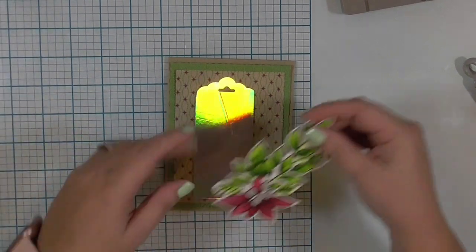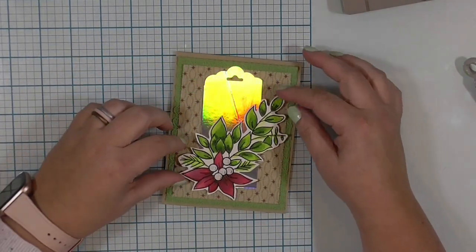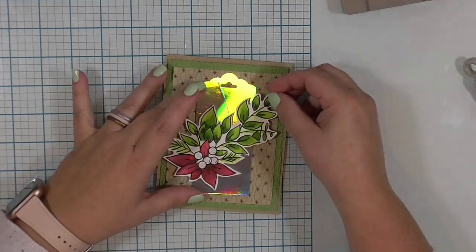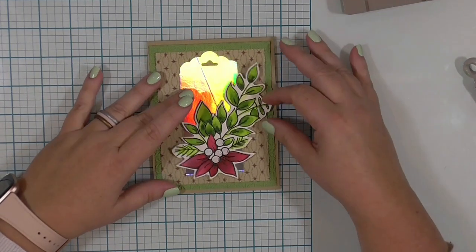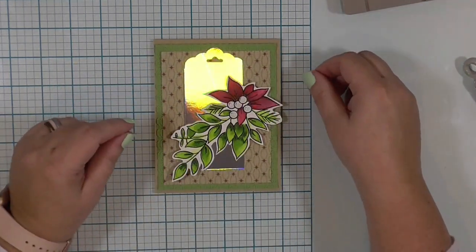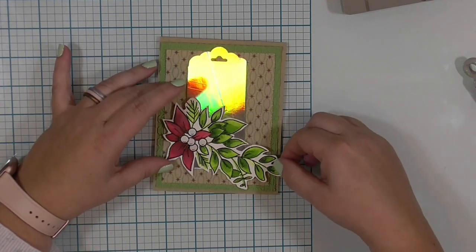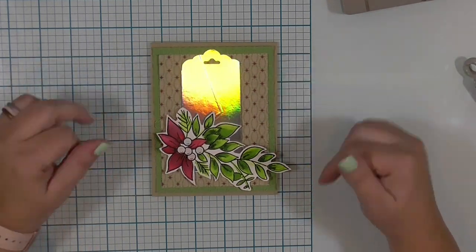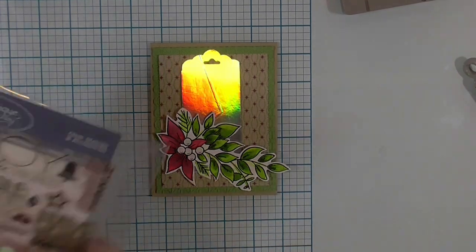So here is the thinking part. Instead of using three objects to create that little cluster of elements on the right hand side of the card sketch, I'm just going to use this one swag. But how do I get it on there? Because I also want to stamp a sentiment and place it on that tag.